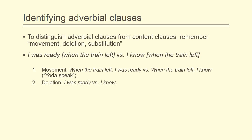Secondly, if we try the deletion test, we have in one case 'I was ready,' which works, versus 'I know.' And 'I know' sounds like it would work, but only as the answer to a question — 'When did the train leave? I know.' But in this instance, we have omitted important information, which substantively changes the nature of the verb. So the deletion test does not work for the content clause, but it does work for the adverbial clause. And finally, when you try the substitution test, you'd use a word like 'then' — 'I was ready then' — for the adverbial. Versus for the content clause, you would have something like 'I know it.' Because 'then' is an adverb and 'it' is a personal pronoun, that tells you what the underlying clause type is.